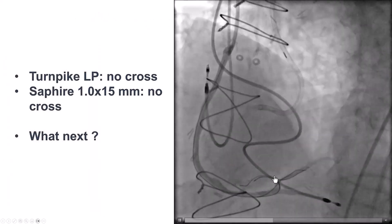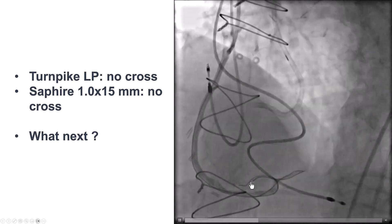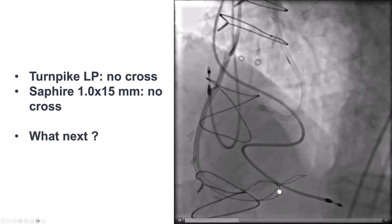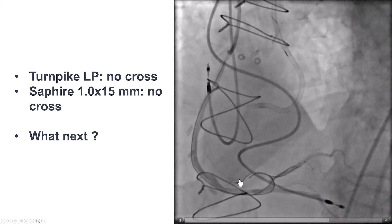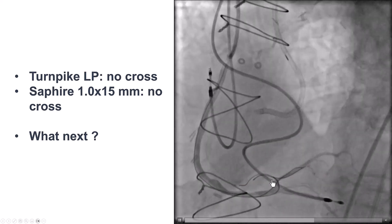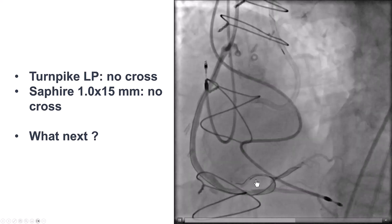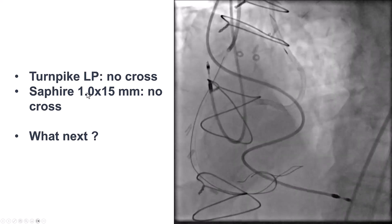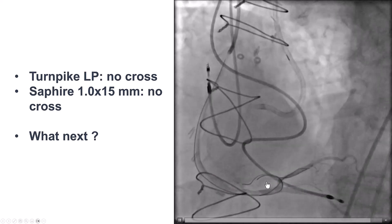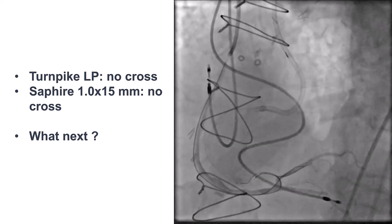The next step was to advance a microcatheter inside the RCA and perform reverse CART. But the problem was nothing would advance — not uncommon in bypass patients with likely severe calcium and a significant bend. We tried the Turnpike LP, which could not advance. We also tried a Sapphire 1.0 by 15, the lowest profile balloon available in the US, but this would also not advance.